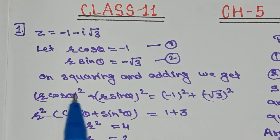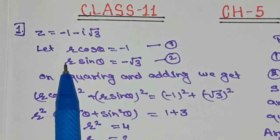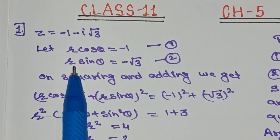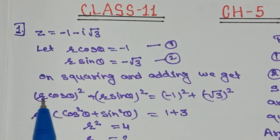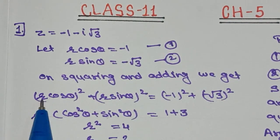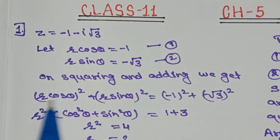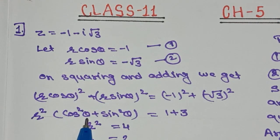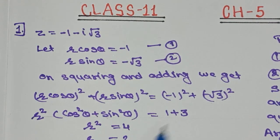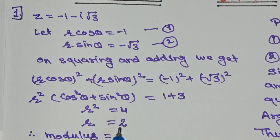Taking r² common from the left side: r²(cos²θ + sin²θ) = 1 + 3 = 4. Since cos²θ + sin²θ = 1, we get r² = 4, so r = ±2. We ignore the negative sign because r represents distance, and distance is never negative. Therefore r = 2, so the modulus is 2. We can also directly calculate: mod z = √((−1)² + (−√3)²) = √(1 + 3) = √4 = 2.